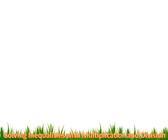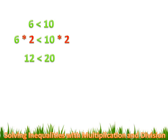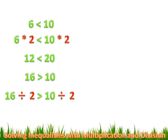Solving that last inequality was just like solving an equation. When you're dealing with positive numbers, solving inequalities with multiplication and division is exactly like solving equations. You know that 6 is less than 10, and if you multiply both sides by 2, it's still true — 12 is less than 20. You also know that 16 is more than 10, and if you divide both sides by 2, it's still true — 8 is larger than 5.